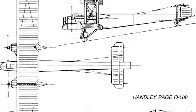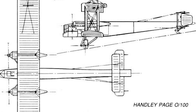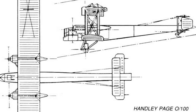The O/400s were originally used for daylight raids, damaging a German destroyer on 23 April 1917. However, the loss of an attack aircraft two days later led to the switch to night attacks, often by single aircraft against German-occupied ports and railway targets.